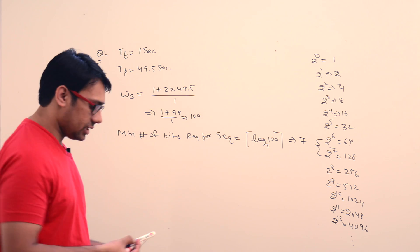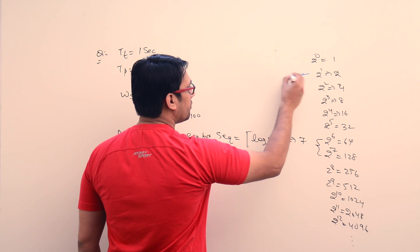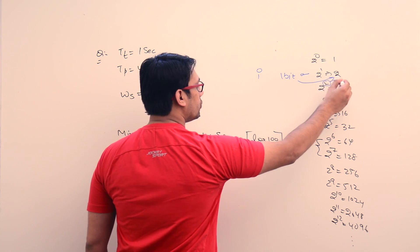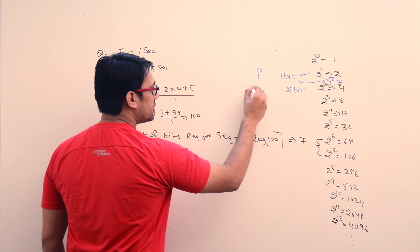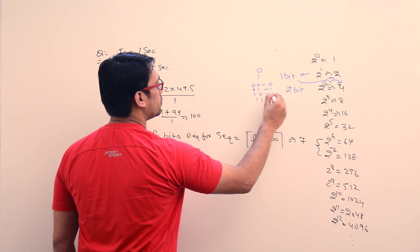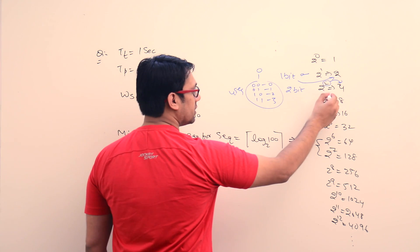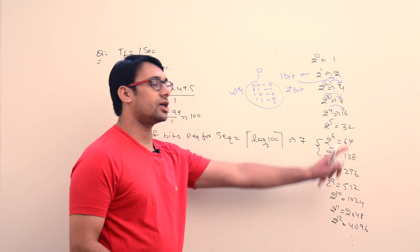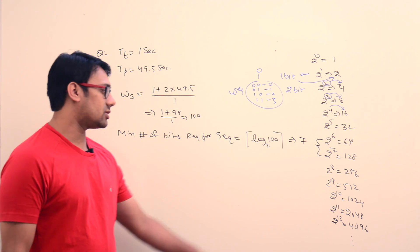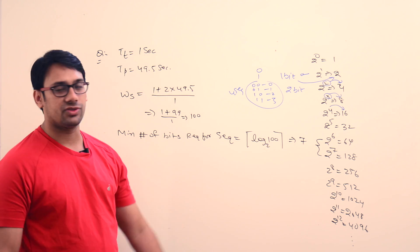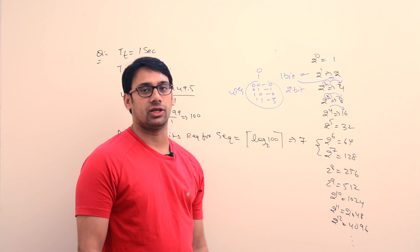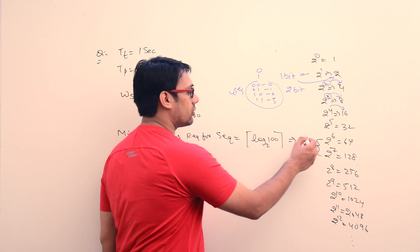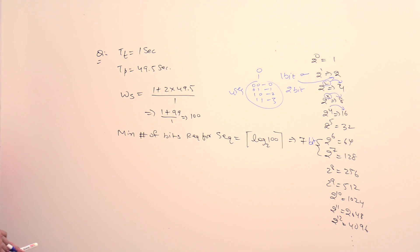With 6 bits we can only represent 64 sequence numbers, because if we have 1 bit we can represent 2 sequence numbers (0 and 1); with 2 bits we represent 4 sequence numbers (00, 01, 10, 11); with 3 bits we get 8; with 4 bits, 16; with 6 bits, only 64. Since 100 lies between 64 and 128, six bits are not enough, but seven bits are enough to represent 100 sequence numbers. Therefore, we require 7 bits to represent 100 sequence numbers.